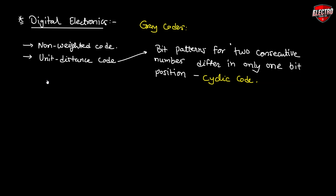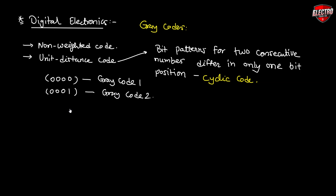Let us discuss the meaning of consecutive numbers differing in only one bit position with an example. The gray code for decimal zero is 0000, and the gray code for decimal one is 0001. If you observe both gray codes, there is only one bit difference, and that is the LSB. In the first code the LSB is zero, and in the second code the LSB is one, with all remaining bits being zero and same respectively.